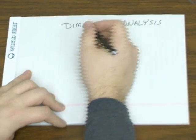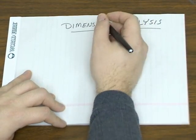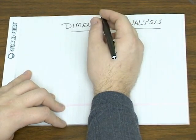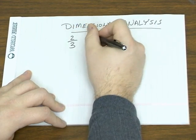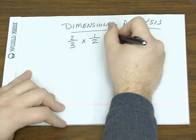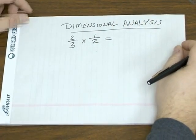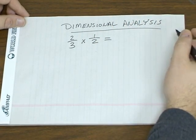Sometimes it's referred to as the factor label method, but essentially it's a technique that's not that much different than a common shortcut kids are taught when they're first taught how to multiply fractions.